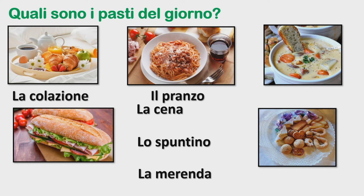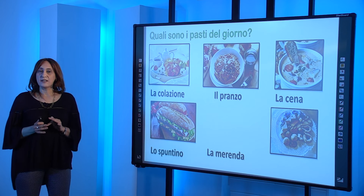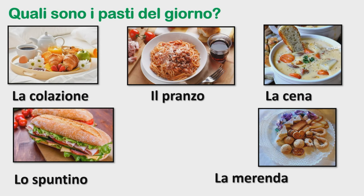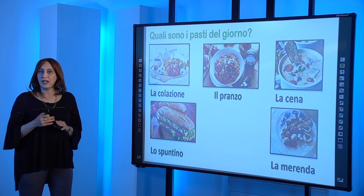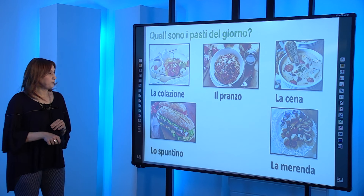La sera abbiamo la cena, quindi questo è il secondo pasto principale del giorno. Se a metà mattina, verso le dieci, abbiamo un po' di fame, possiamo fare uno spuntino. Per i ragazzi più piccoli, a metà pomeriggio, se hanno fame prima della cena, possono fare una merenda. Possono mangiare dei biscotti, bere una spremuta di frutta, oppure in Italia molto famosa la merenda con pane e nutella.